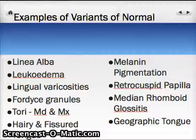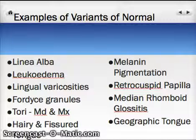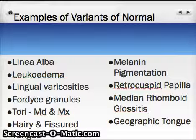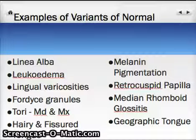That covers the most common variants of normal. We've looked at linea alba, leucoedema, lingual varicosities, Fordyce granules, tori (both mandibular and maxillary), hairy and fissured tongue, melanin pigmentation, retrocuspid papillae, median rhomboid glossitis, and geographic tongue. Be sure you remember these typical variants of normal — you will most definitely see these again throughout the entire semester. Thanks for listening, and I will see you next time in our pathology videos.